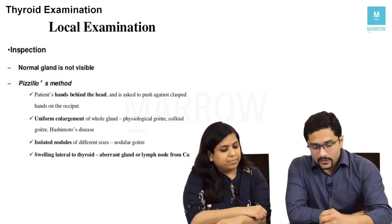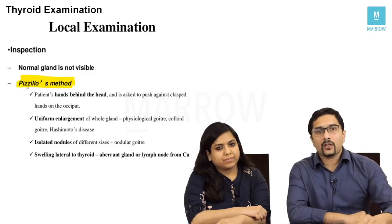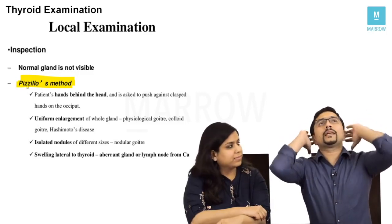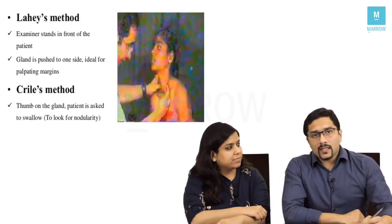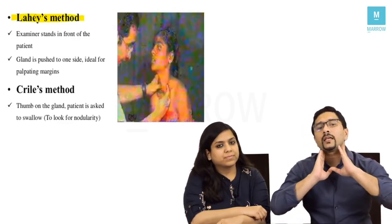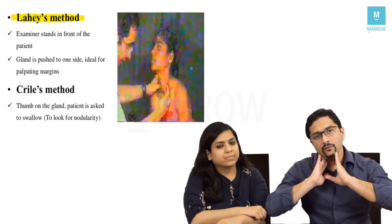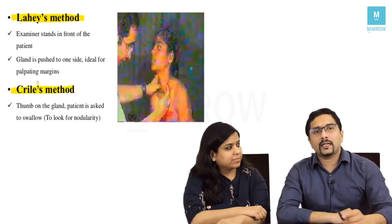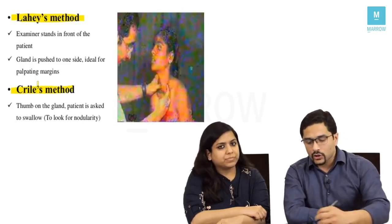There are three examination methods to highlight. In the Pizzillo's method, the patient keeps their hands behind the head and then you examine the thyroid swelling. The Lahi's method is for feeling the borders and sides of the swelling — the examiner stands in front and pushes the thyroid gland from one side to the other. The Crile's method is when the examiner uses the thumb to look for nodularity.